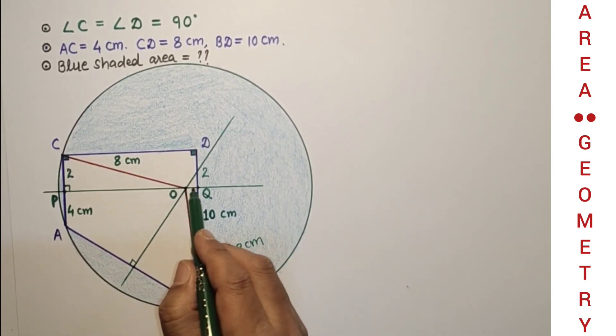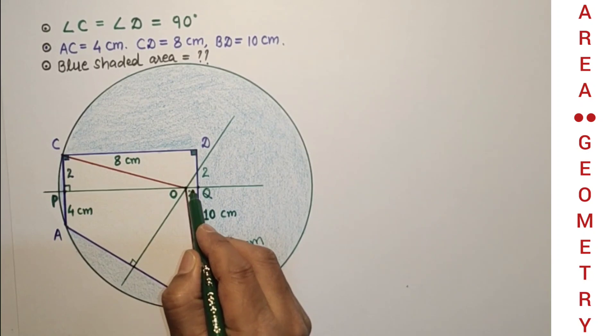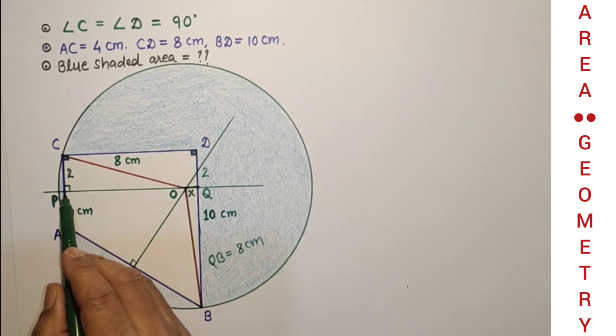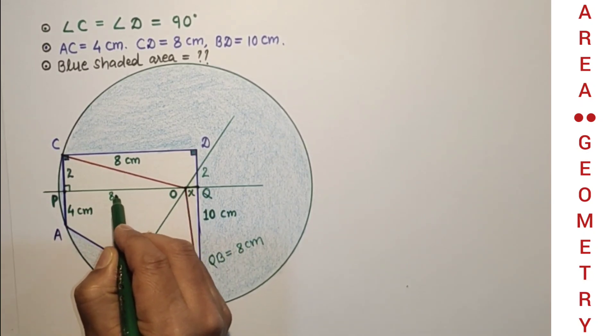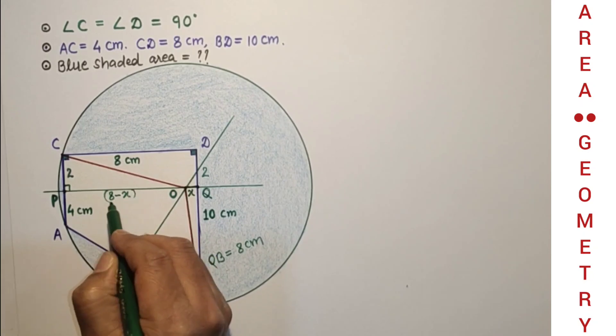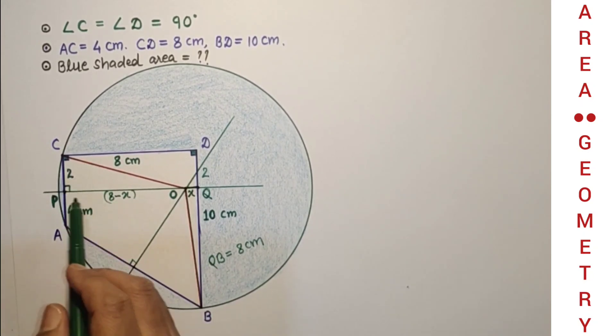Let us suppose this OQ is X cm. If this is X, this PQ is 8, so only PO is 8 minus X. So using these two triangles, OC is radius of the circle that is equal to OB.